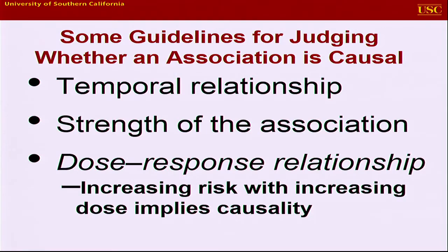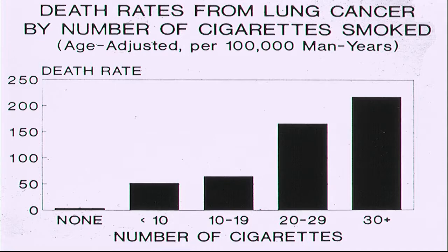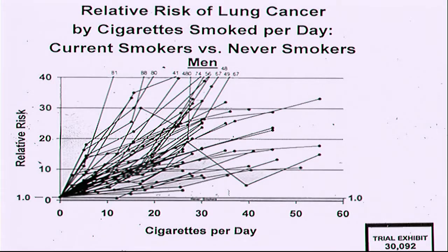There's dose response and consistency. Here's dose response from the British doctor study — rising lung cancer mortality with more cigarettes per day. This is something I put together for the litigation by the state of Minnesota against the tobacco industry. These are the results of about 70 epidemiological studies showing a relative risk for lung cancer compared with never smokers — here's an example of the counterfactual. Few things increase disease risk 40-fold. Consistent evidence of rising risk — dose response, strength, and consistency across the studies.